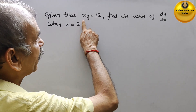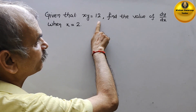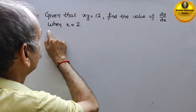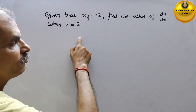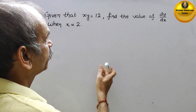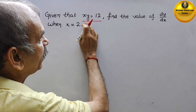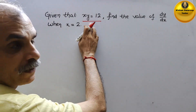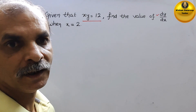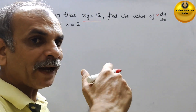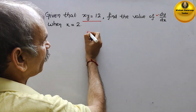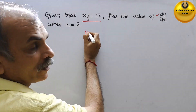Your question is: given that xy is equal to 12, find the value of dy by dx when x is equal to 2. So now, to find dy by dx, we have to differentiate with respect to x. Therefore, we will first find out what y is.